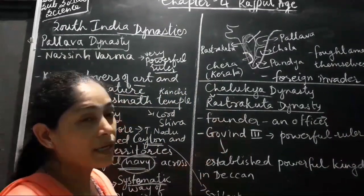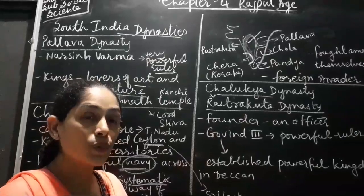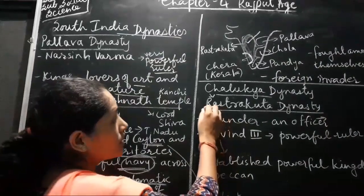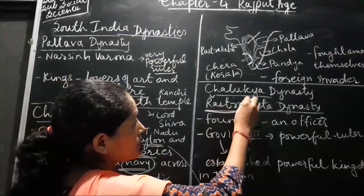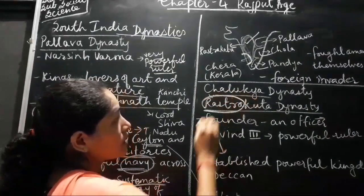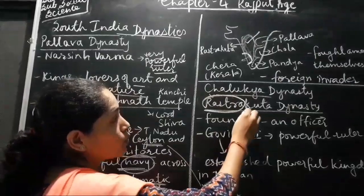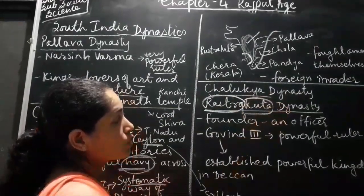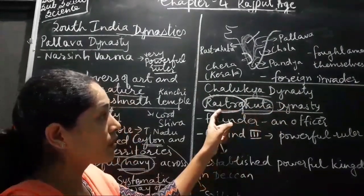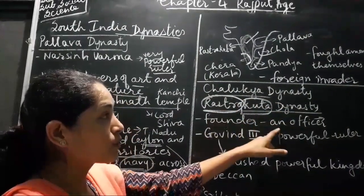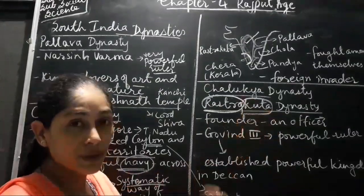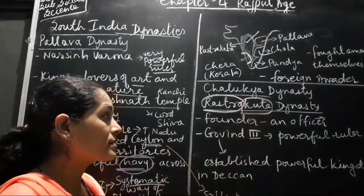He was the one who started the dynasty. The name Rastra means country and Kuta means head. So the head of the country — that was Dantidurga — and he started the dynasty.